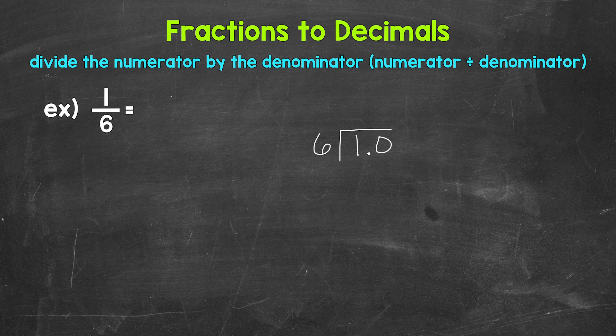And once we have that decimal and the zero, we bring the decimal straight up into where the quotient, the answer, will be. Now we can think of this as 10 divided by 6. So how many whole groups of 6 in 10? Well, 1. And we need to make sure that 1 is above the zero, since we used that zero and thought of this as 10. And that will line us up correctly.